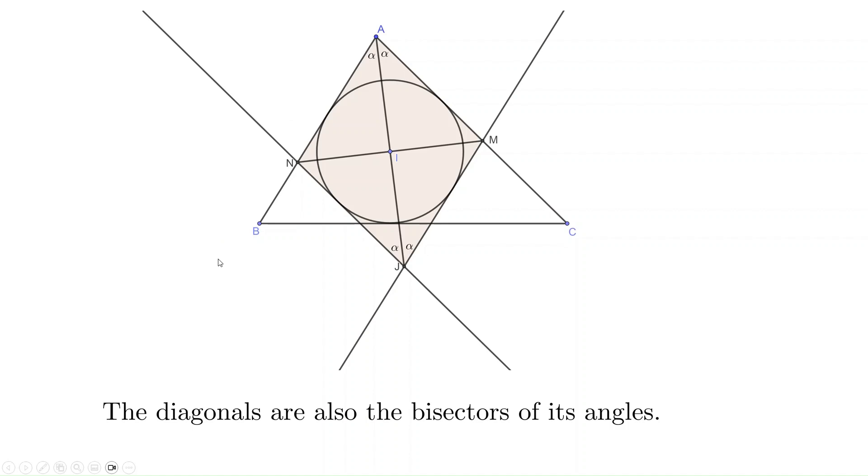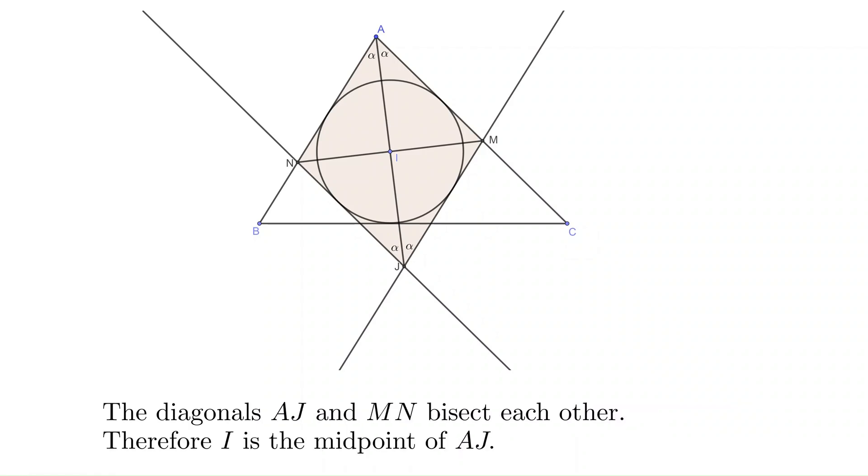The diagonals of the rhombus are also the bisectors of each angle. So we denote the measures of the four small angles at A and J as alpha. The diagonals AJ and MN also bisect each other. Therefore, I is the midpoint of AJ.